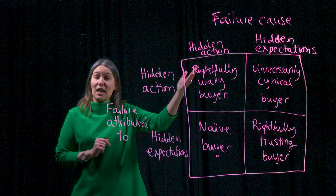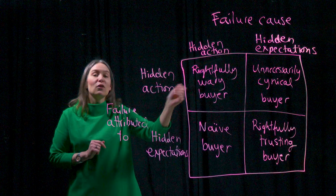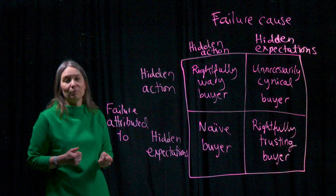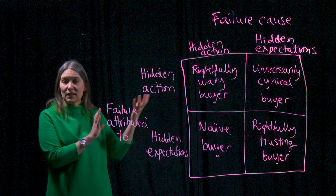If hidden action has been the true cause and the buyer correctly attributes the failure to hidden action, we call this the rightfully wary buyer. Drawing from agency theory, the buyer will likely either exit the relationship or apply sanctions towards the supplier. The mechanisms are a match to the underlying cause, so while hidden action has taken place, the correctly applied mechanisms will hopefully address future failures and the supplier will correct their actions.